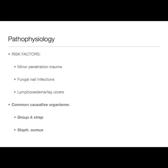In terms of the pathophysiology, it's useful to be aware of both risk factors and the common causative organisms. Probably the most important risk factor is penetrating injury to the skin, as this allows causative bacteria to enter and cause infection. However, other risk factors include fungal nail infections, which may provide a route of entry, and lymphedema and leg ulcers. You'll often see patients with considerable lymphedema, say secondary to venous disease of the lower limbs, who also have co-existent leg ulcers, presenting with cellulitis.